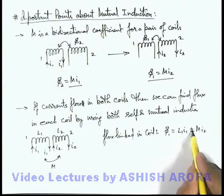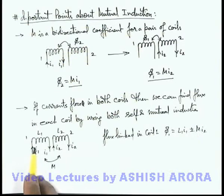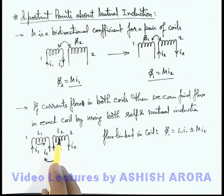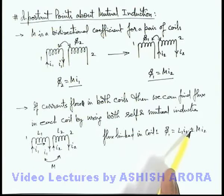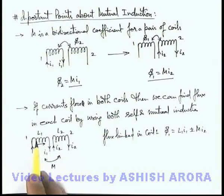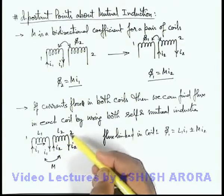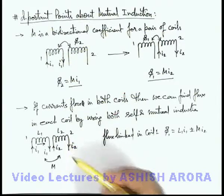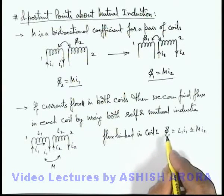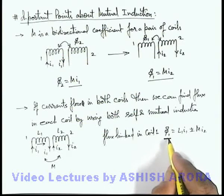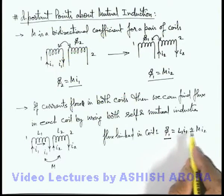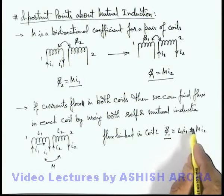We take both plus and minus because if current i-1 produces a magnetic field in L-1 in one direction and due to current i-2 the magnetic field is also in the same direction, they will add. But if it is in the opposite direction it will be subtracted, so the total flux will be less than that due to i-1 alone. The direction of the magnetic field depends on the turns — whether they are clockwise or anti-clockwise. So total flux linked with the first coil is L-1·i-1 plus or minus M·i-2.